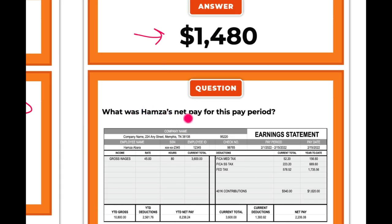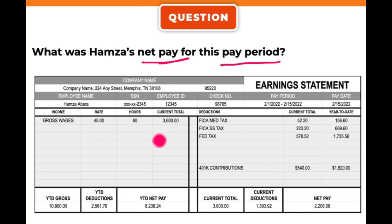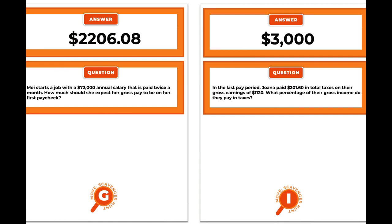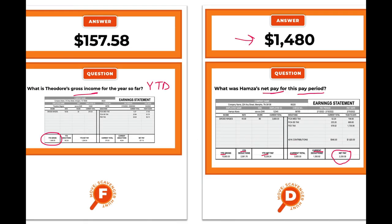What was Hamza's net pay for this pay period? Net pay is after taxes and deductions for this pay period — not the year-to-date figure. We want the current net pay. Many pay stubs don't label it 'current net pay,' it's just listed as net pay. Notice that this pay stub, like many, has current pay period figures on one side and year-to-date figures on the other. The current net pay is $2,206.08.